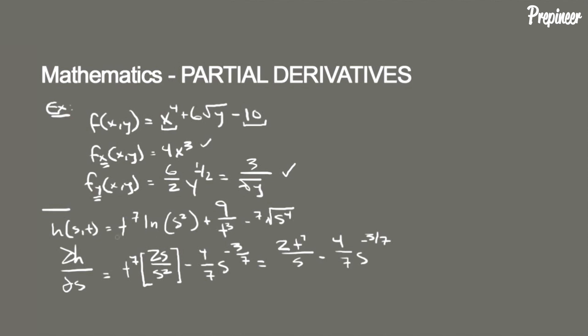So that's our derivative of h(s,t) with respect to s. Now let's find the partial derivative of h with respect to t. We're going to hold all the s terms constant, and since this last term all it has is s, that's going to go to zero.